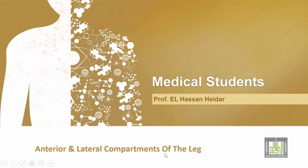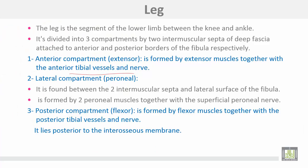Anterior Compartment of the Leg. The leg is the segment of the lower limb between the knee joint and the ankle. It is divided into three compartments by two intermuscular septa of the deep fascia attached to the anterior and posterior borders of the fibula.